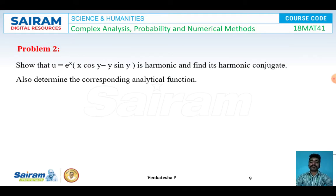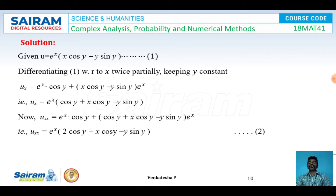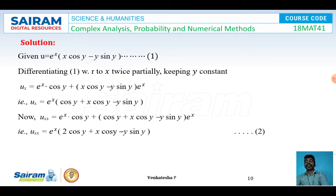Problem 2: Show that u = eˣ(x·cos y − y·sin y) is harmonic, find its harmonic conjugate, and find the corresponding analytic function. Given u = eˣ(x·cos y − y·sin y) (equation 1), differentiating with respect to x using the product rule, keeping y constant: u_x = eˣ(cos y + x·cos y − y·sin y).